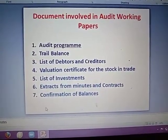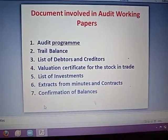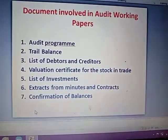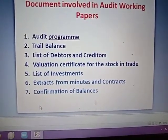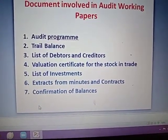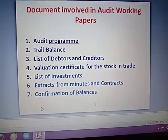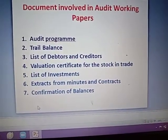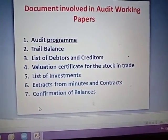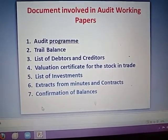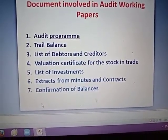In the balance sheet, compare the trial balance. If you compare the financial statement, that is number two — trial balance. Number three — list of debtors and creditors.